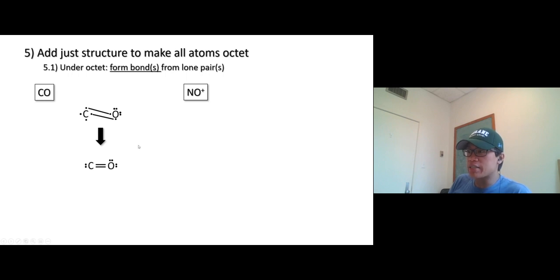Now let's check atoms in this structure, if everyone's octet. Start with oxygen. Oxygen right here, one, two, three, four, five, six, seven, eight, so oxygen is octet. But carbon though, one, two, three, four, five, six. Carbon is not octet.